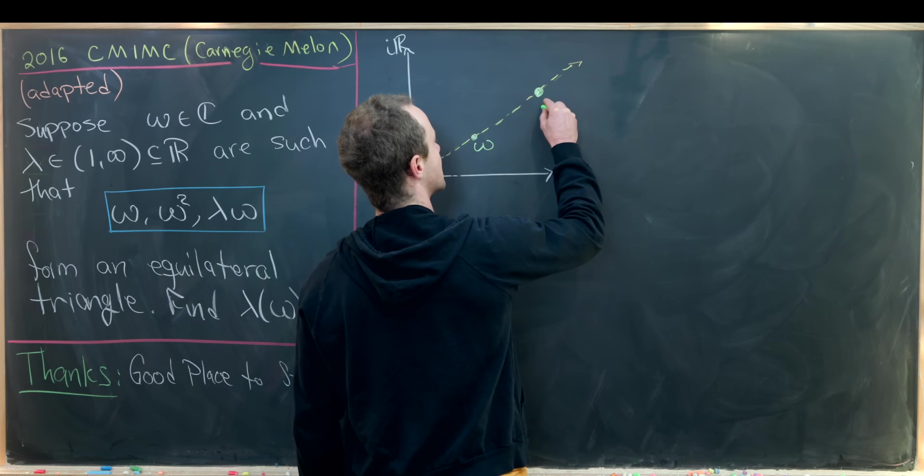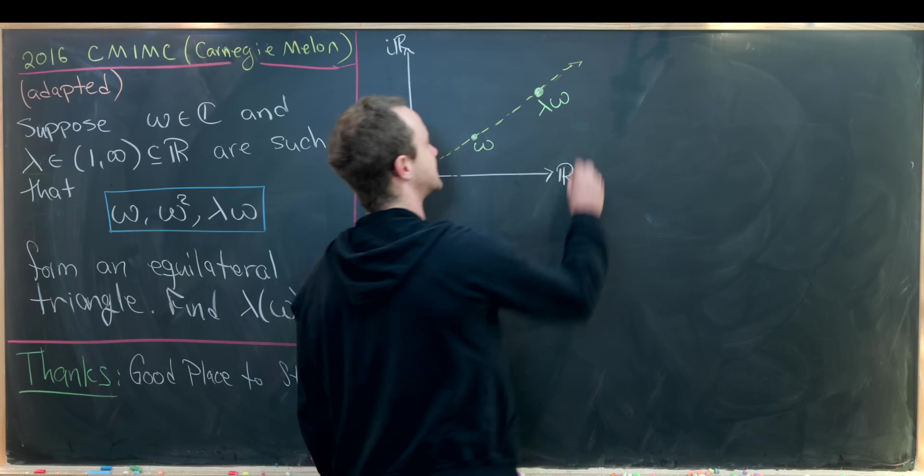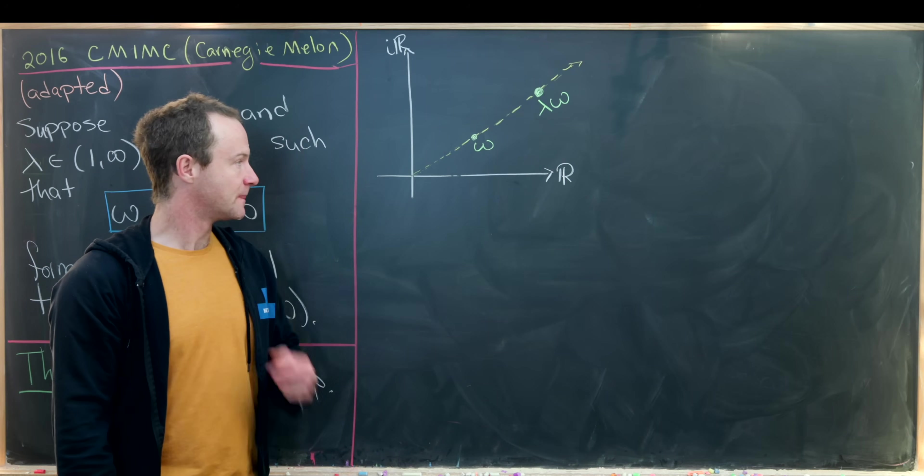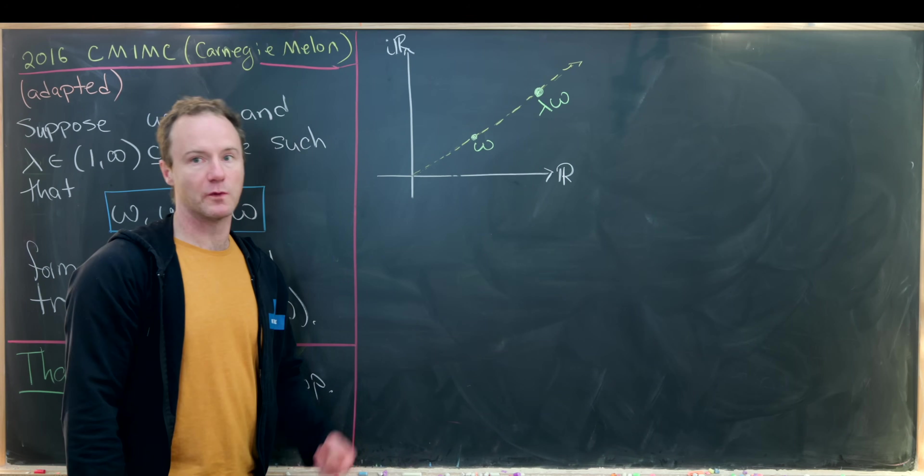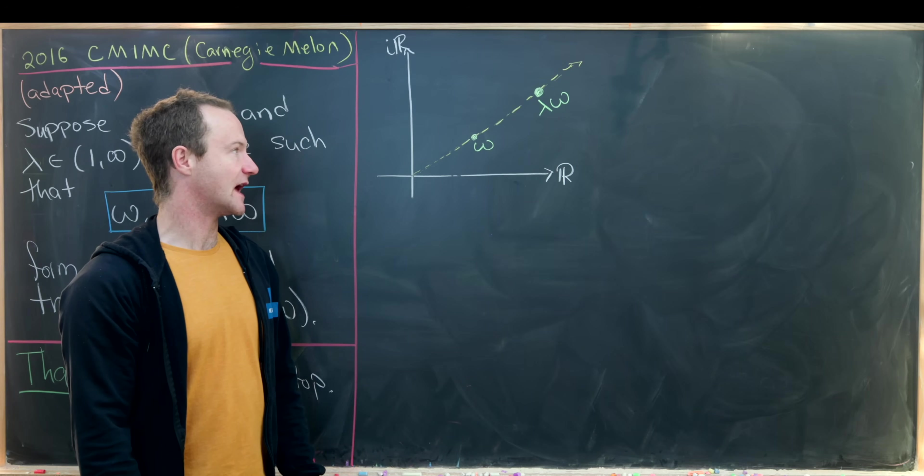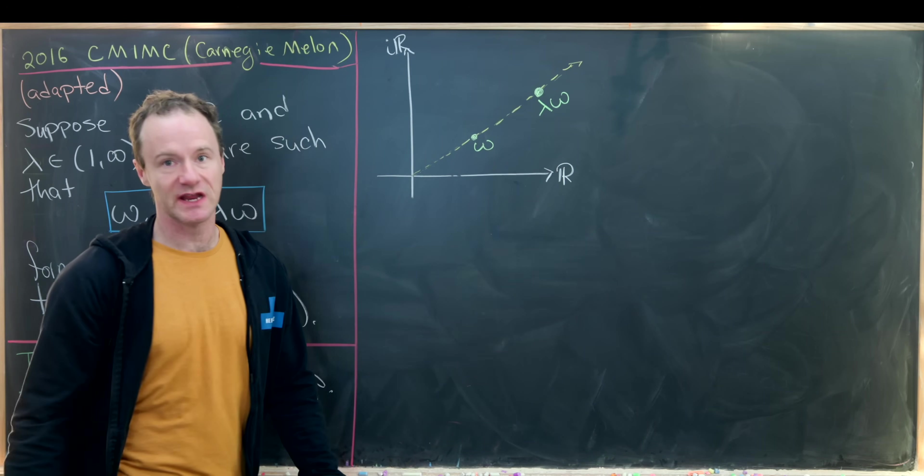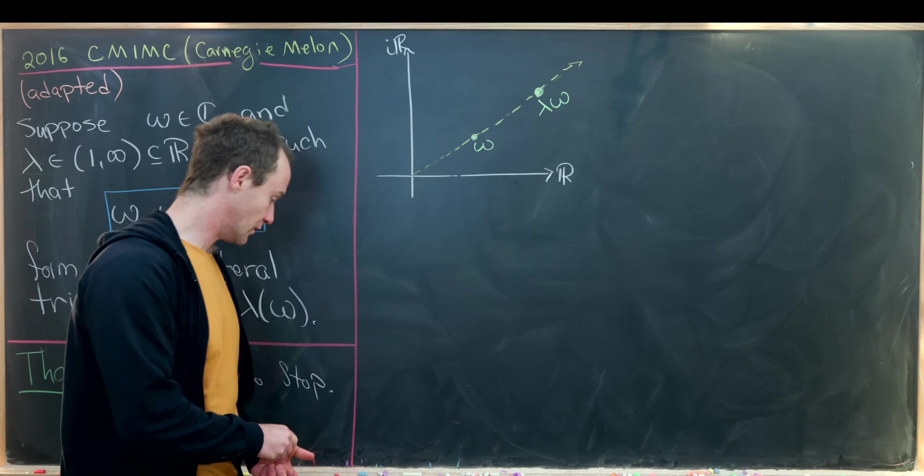So I'll just put right here, this is lambda times omega, like that. Okay, so that's looking good. And then omega squared will be related to omega in that it will have a square of the distance from the origin, and the argument will be doubled.